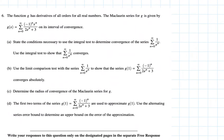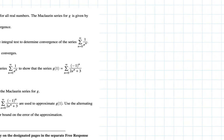We have to do some operations on a Maclaurin series. The Maclaurin series is the summation from n equals zero to infinity of negative one to the nth power times x to the nth power over two times e to the n plus three. Part A asks us to state the conditions necessary to use the integral test to determine the convergence of the series: summation from n equals zero to infinity of one over e to the nth power.